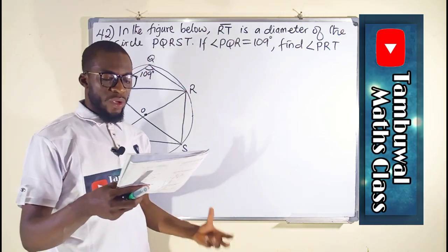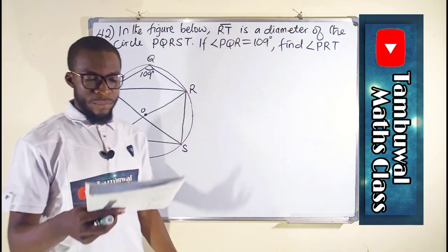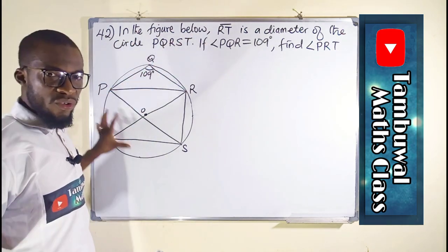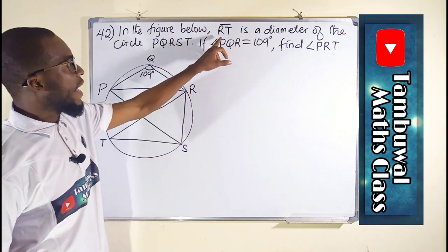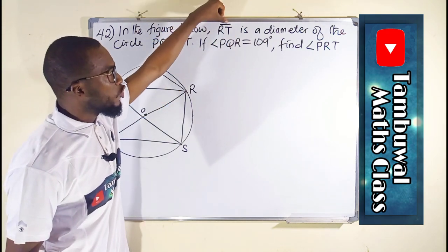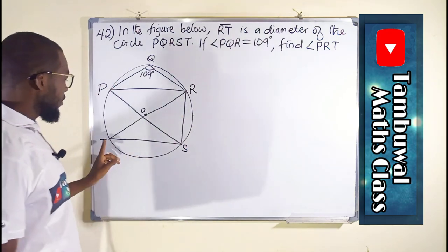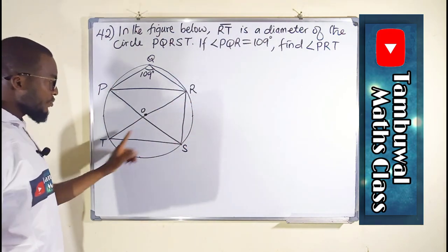Question number 42 is also a question from circle theorem. It says in the figure below, we are referring to this diagram. Line RT, because of this line on top, is referring to a straight line. You can see it here, RT, a straight line.